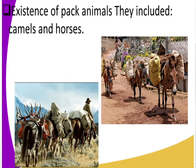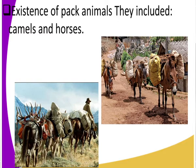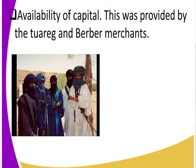Another factor was the existence of pack animals. These included animals like camels and horses, which could carry goods on their back. These animals highly facilitated transportation of the traders and the trade goods. As you can see in the pictures, there are horses and donkeys carrying goods, and one of the horses is carrying a trader. These pack animals could carry both trade goods and the traders themselves.